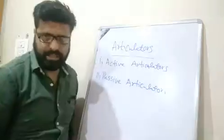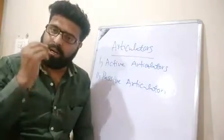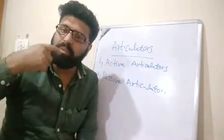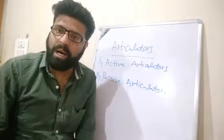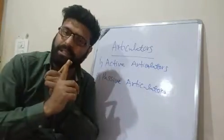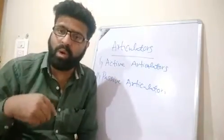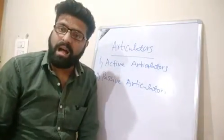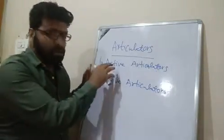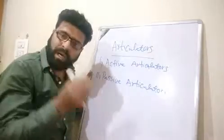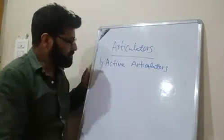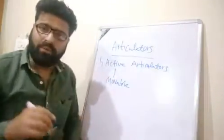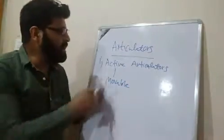Active articulators are those parts of our mouth which can move — which are movable. For example, we can move our lips when we say 'baa' — see how our lips join and touch each other. Or when we say 'waa', we can round them. Our tongue also moves; for example, when we say 'taa'. Those parts of our mouth which move when we articulate a sound are called active articulators.